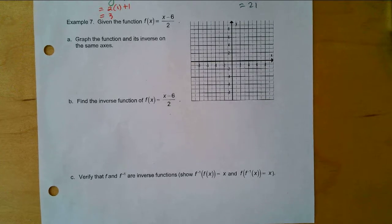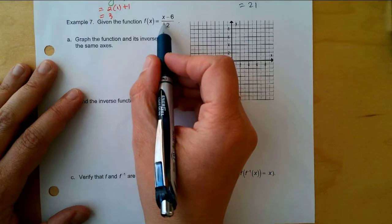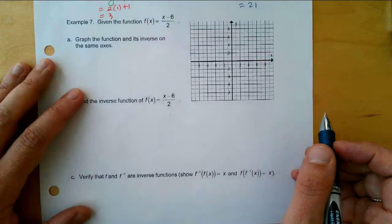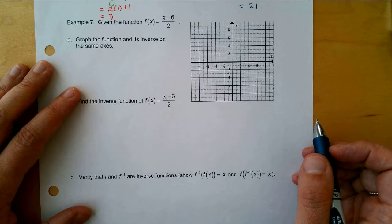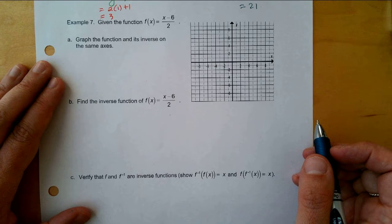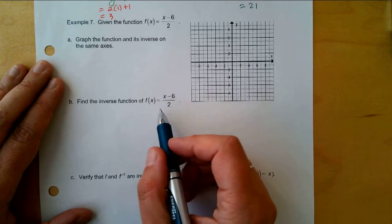Alright, the last example: given the function f(x) equals x minus 6 divided by 2, we want to graph the function and its inverse on the same set of axes. We could actually find the inverse graphically, but let's first start by graphing this.